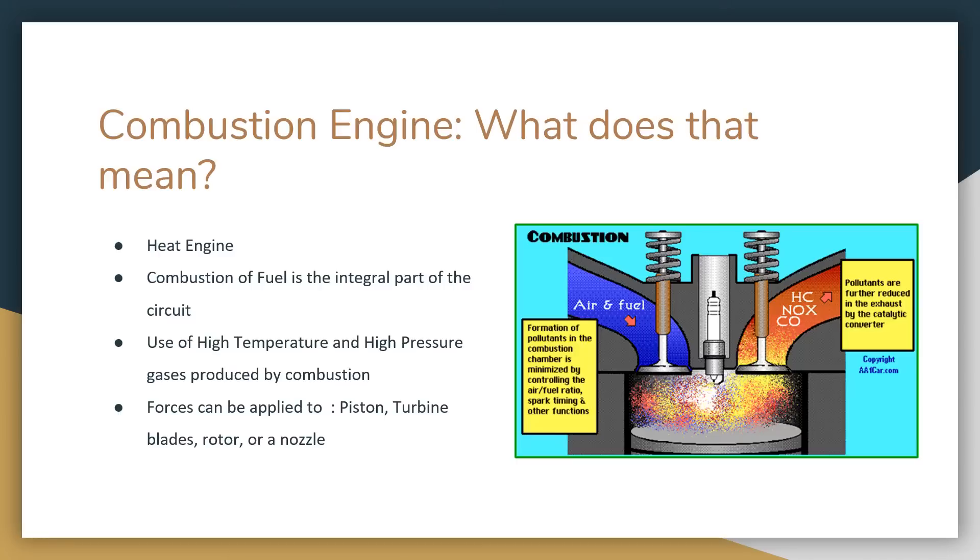In the internal combustion engine, we see the expansion of high temperature and high pressure gases produced by combustion apply direct force on some component of the engine. Generally this is a piston, but it can also be used for turbine blades, rotors, or a nozzle. That force moves a component over a distance, which transforms that chemical energy into useful mechanical energy.